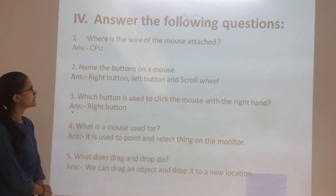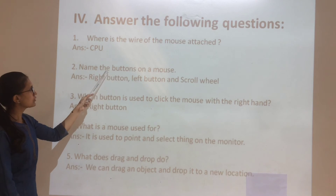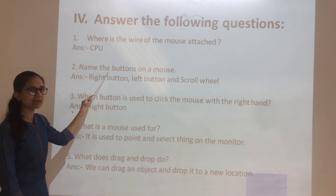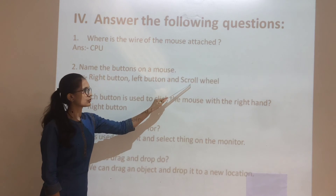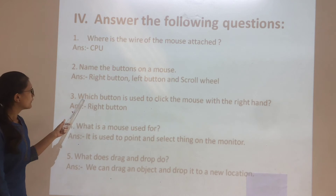Next question: name the buttons on a mouse. The mouse has three buttons — the right button, the left button, and the scroll wheel.